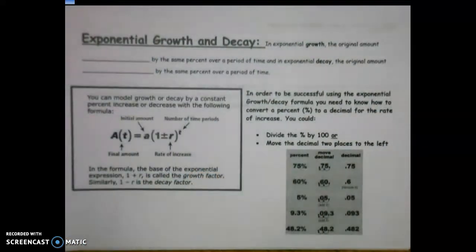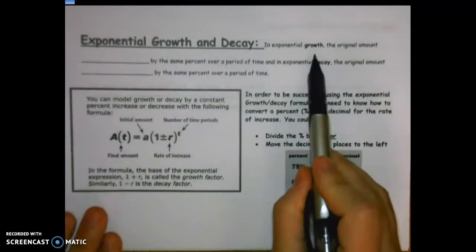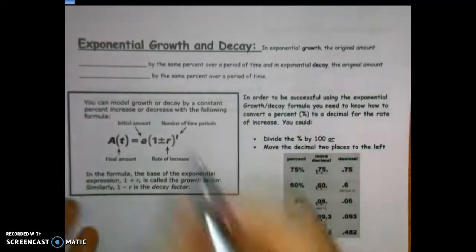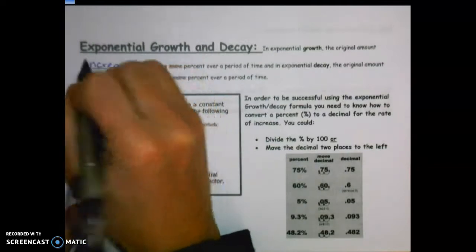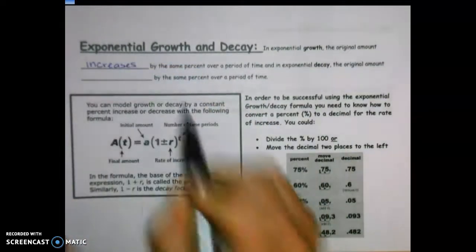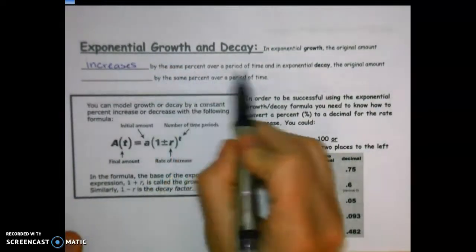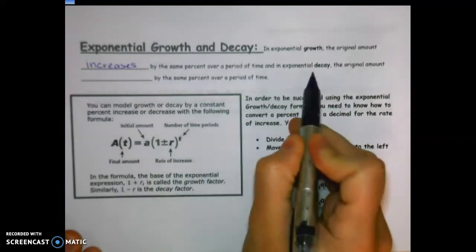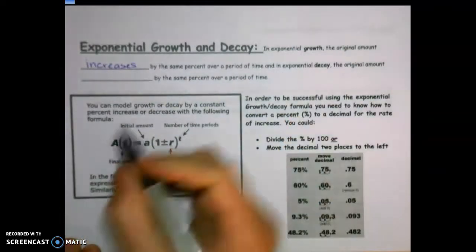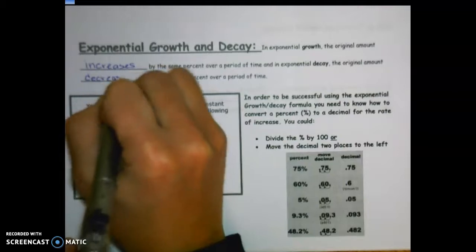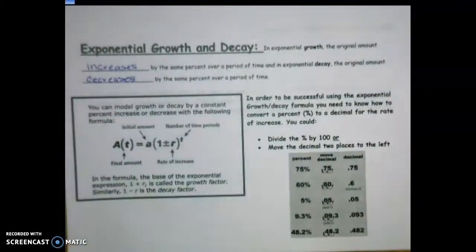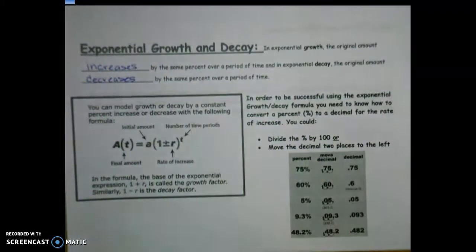The difference is: in exponential growth, the original amount increases or gets bigger by the same percent over a period of time. In exponential decay, the original amount decreases or gets smaller by the same percent over a period of time. There's a general formula we could use for both growth and decay.